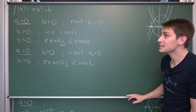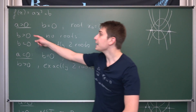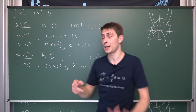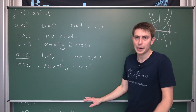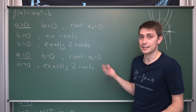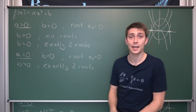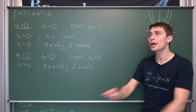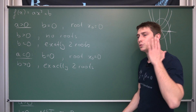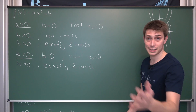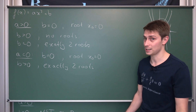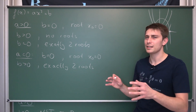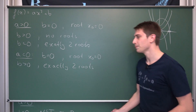A useful mnemonic: if a and b have opposite signs — one positive and the other negative — we are going to have exactly two roots. This mnemonic comes in quite handy because you can see at a glance, without any calculations at all, how many roots you must have. Then you can start calculating after that.